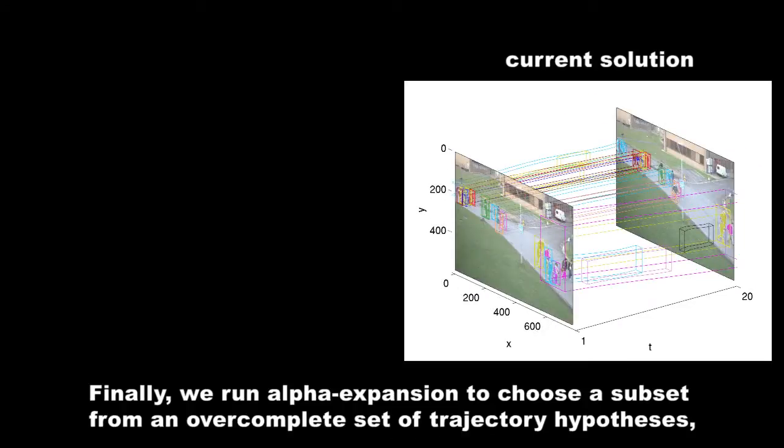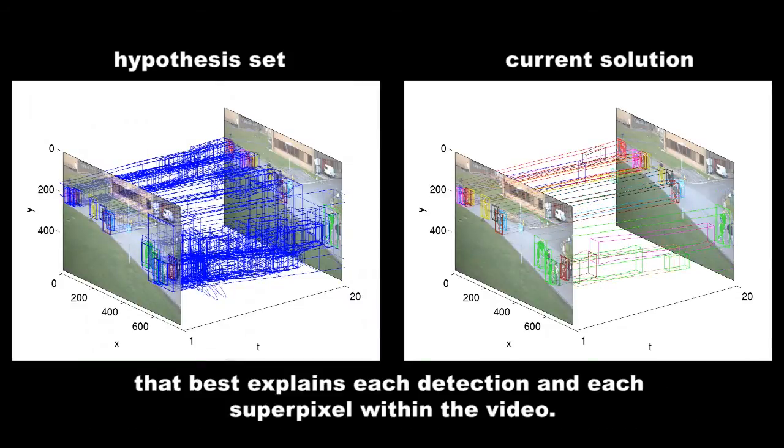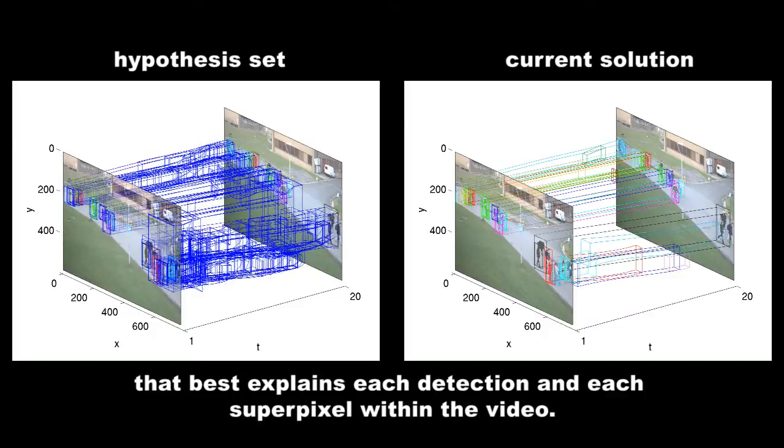Finally, we run alpha-expansion to choose a subset from an over-complete set of trajectory hypotheses that best explains each detection and each superpixel within the video.